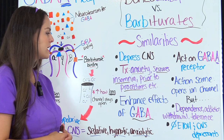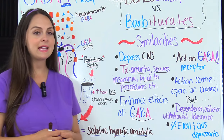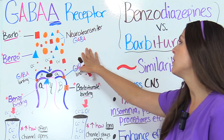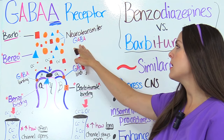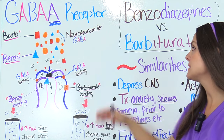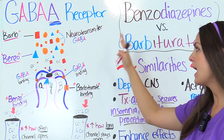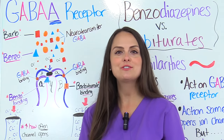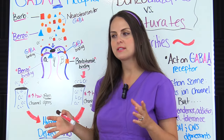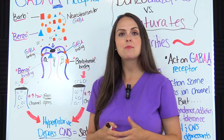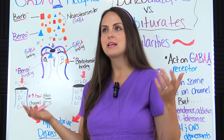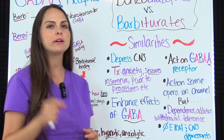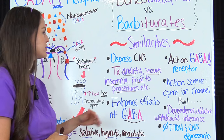Both of these drugs enhance the effects of the neurotransmitter GABA, which is gamma-aminobutyric acid. So they enhance how this inhibitory neurotransmitter works in our body, and what we get is a depressed central nervous system. We'll quickly go over the mechanism of action in a moment.